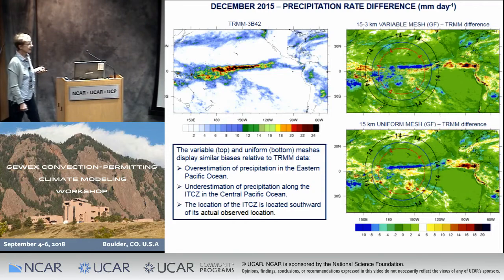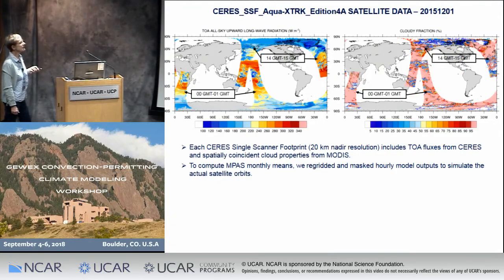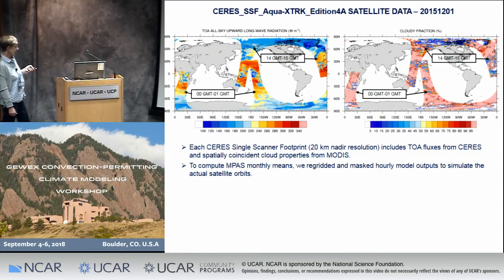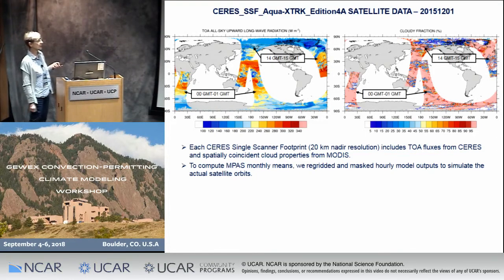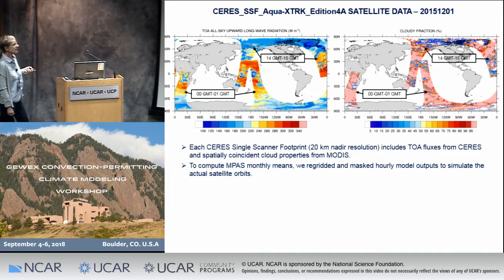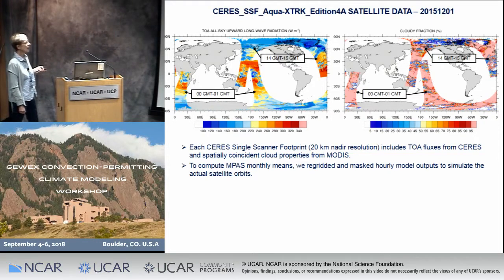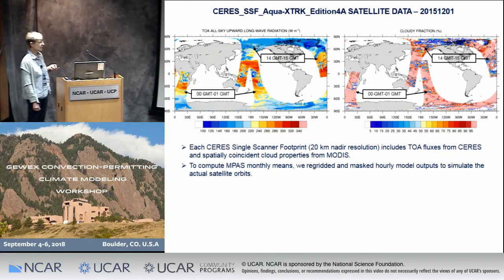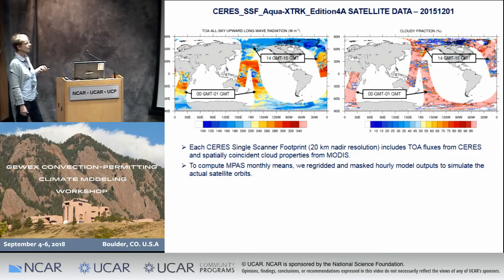To go deeper into the analysis, I looked at cloud properties and radiation using the CERES single scanner footprint data, which has a 24-20 km nadir resolution. It includes top-of-atmosphere fluxes from the CERES instrument, and we also have spatially coincident cloud properties averaged within the CERES footprint, so we can easily compare cloud optical properties and radiation together. To compute the monthly mean, I re-gridded the single scanner footprints within a 0.2-degree rectangular mesh and used my MPAS output to follow what the satellite would see to recalculate the monthly mean — so we calculate monthly means from satellite data and model in exactly the same way.